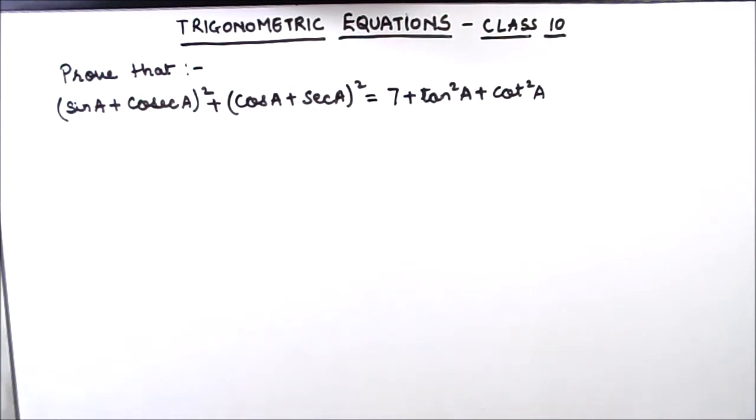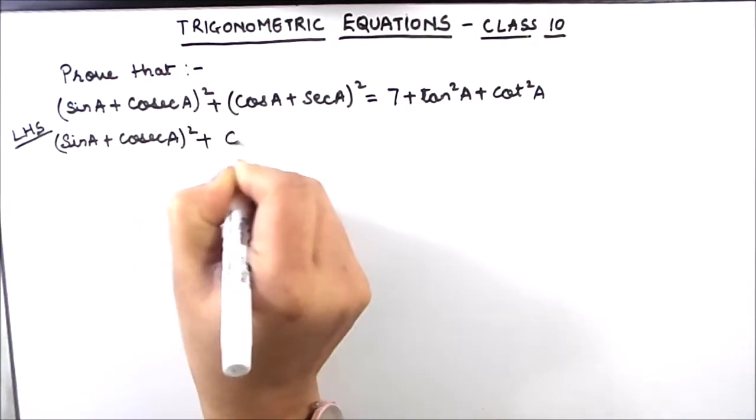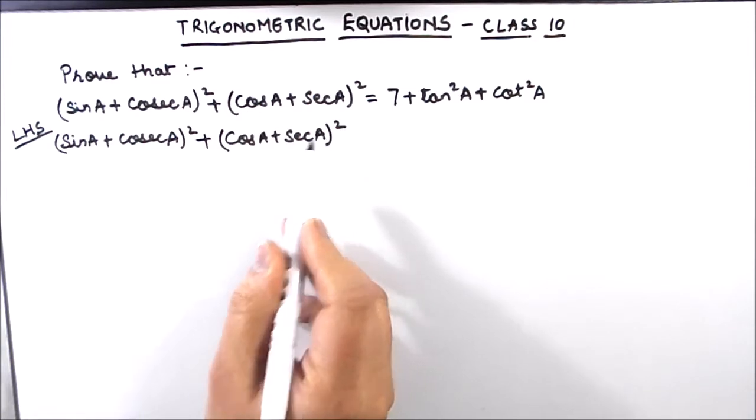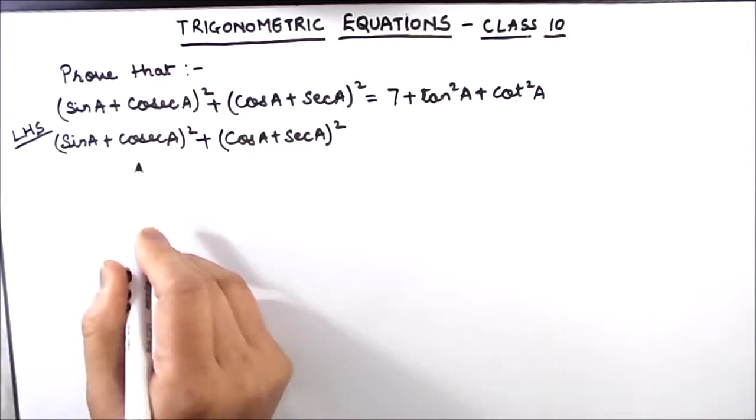In these type of questions we should always start from one side of the equation. So here we will take the left hand side of the equation and solve it. As there is a whole square here, we are going to use the identity of (a + b)² and expand these expressions.